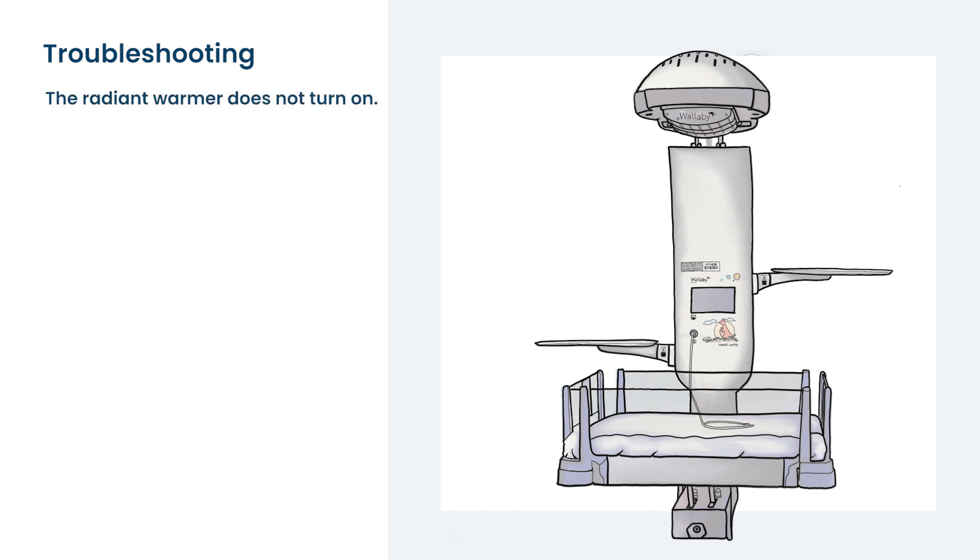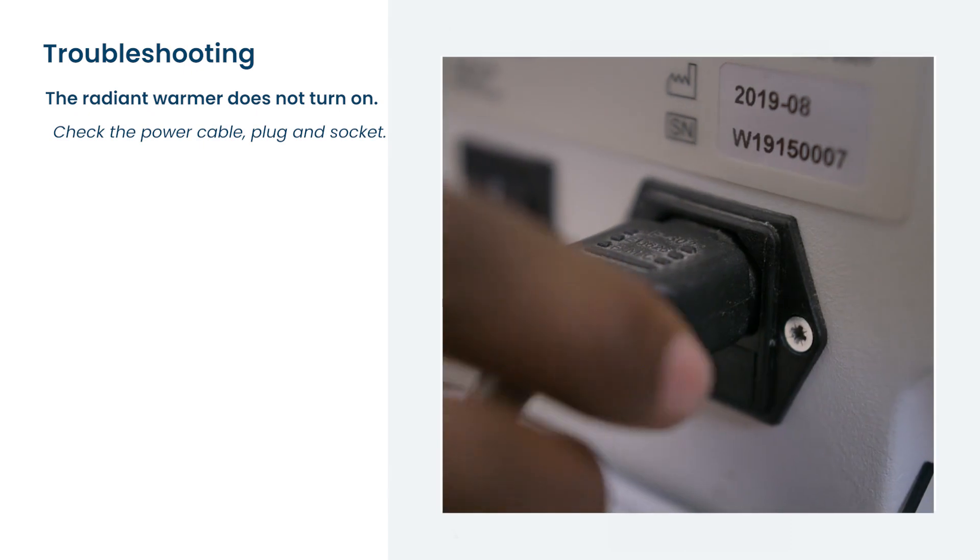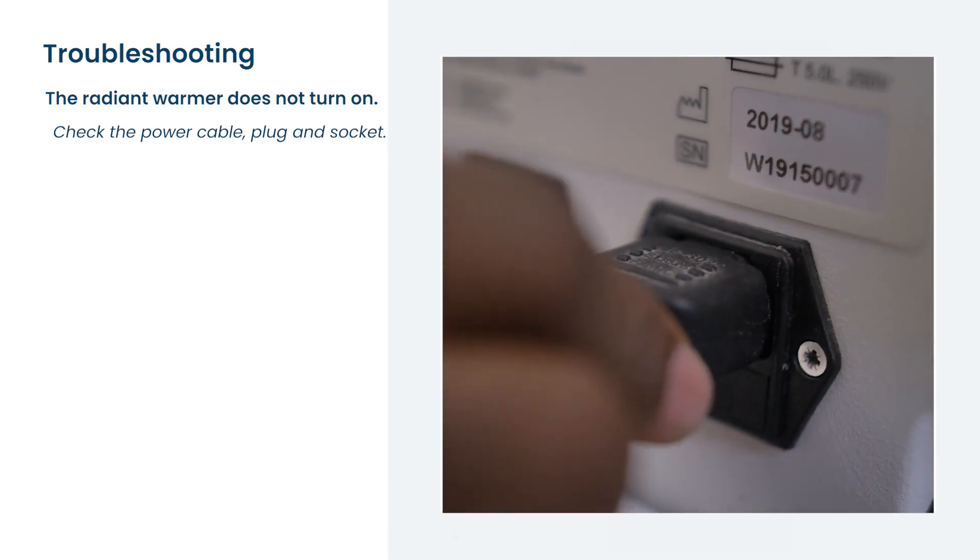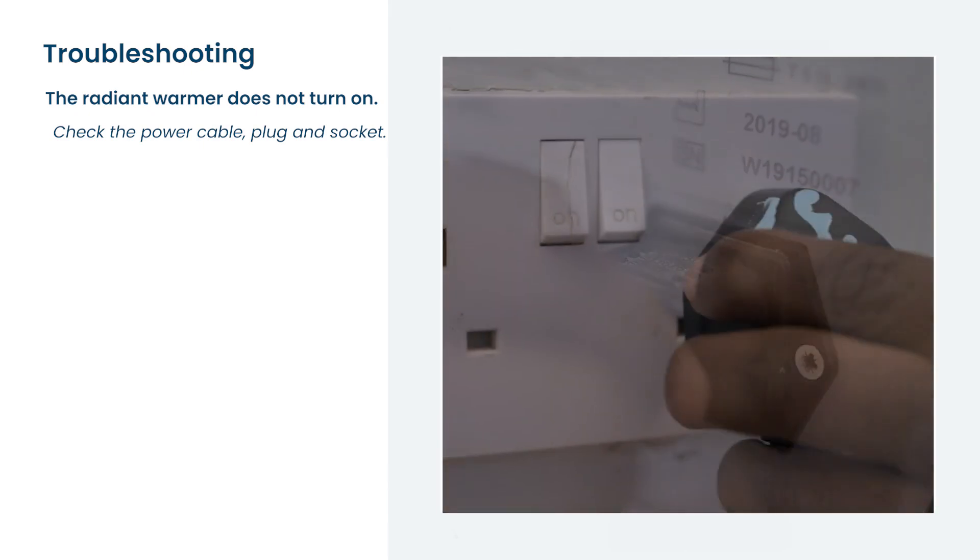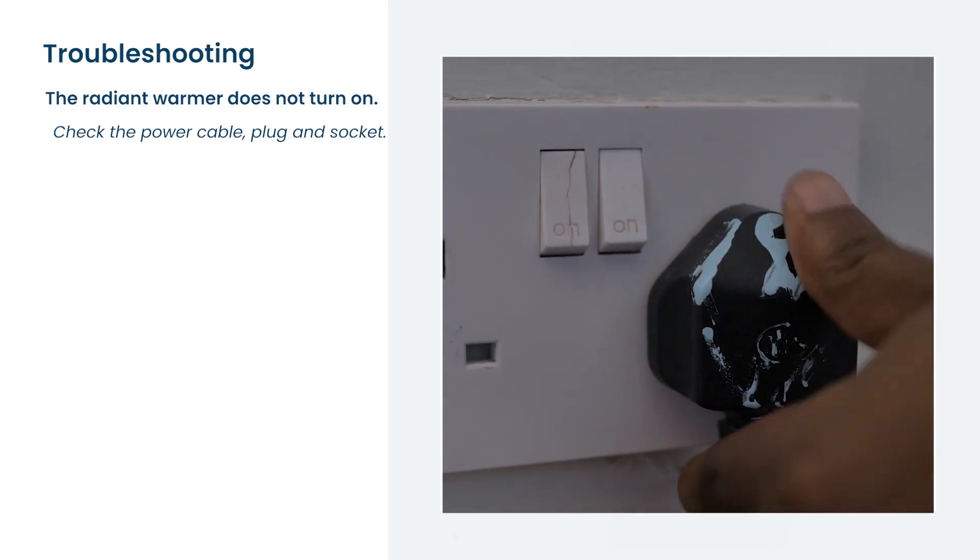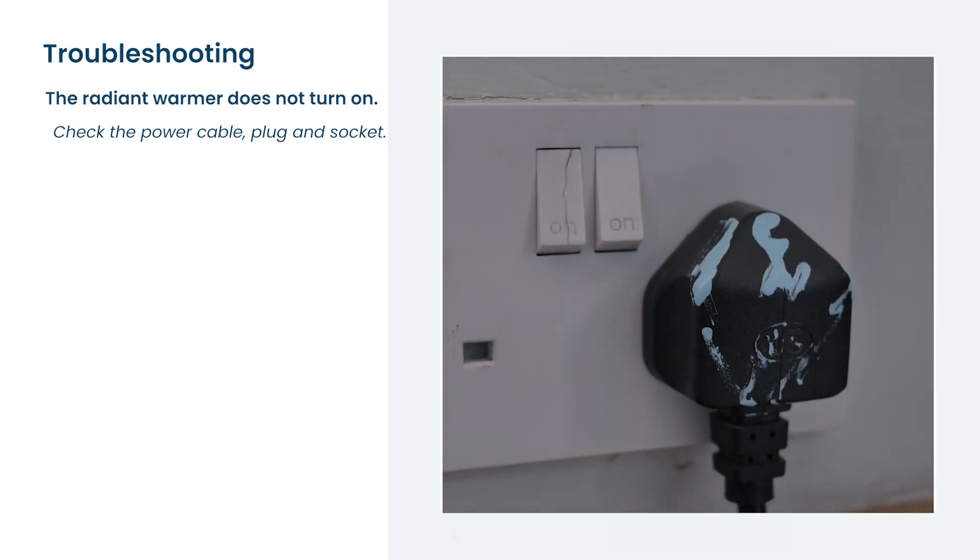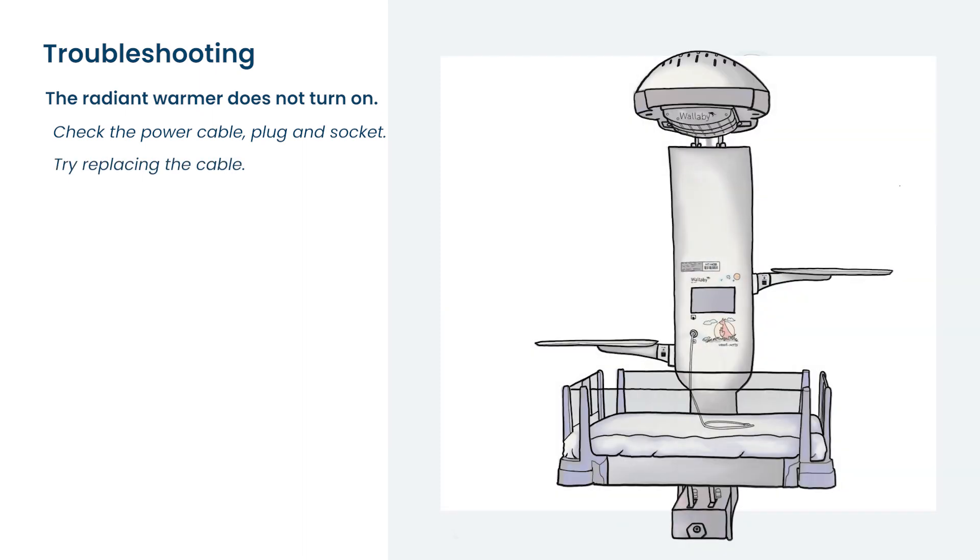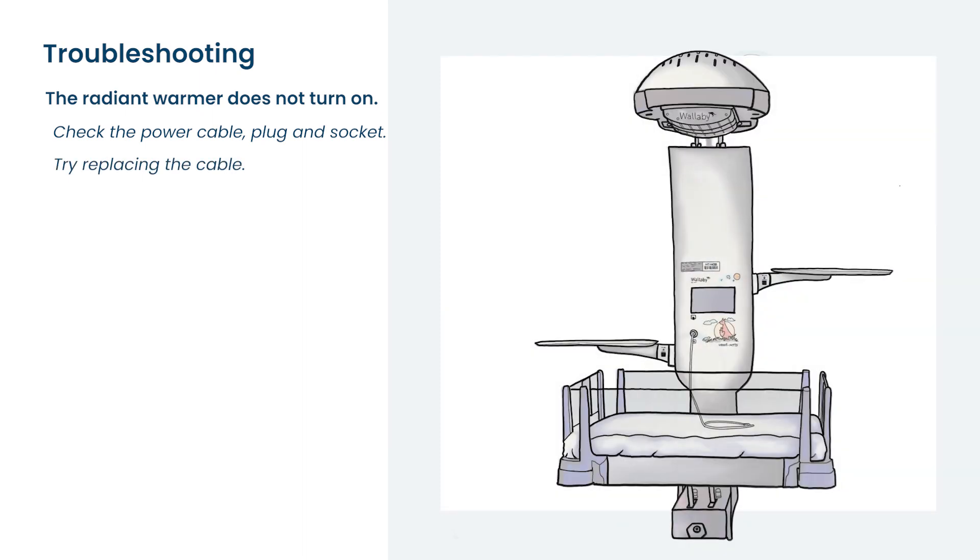If the radiant warmer does not turn on, check that the power cable is plugged properly into the back of the machine and the wall and that the socket has power. If that does not resolve the problem, try replacing the cable. If that does not work, contact the maintenance department.